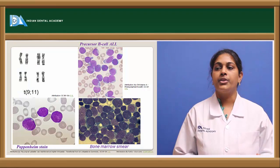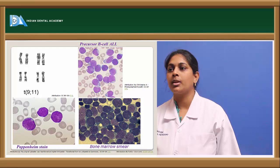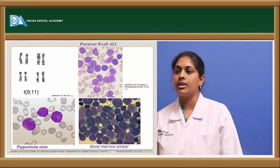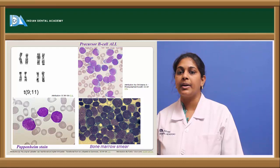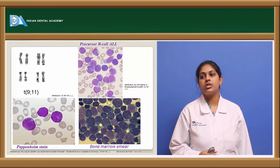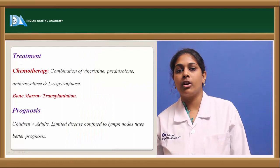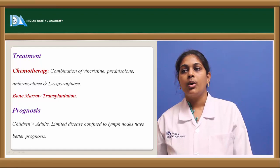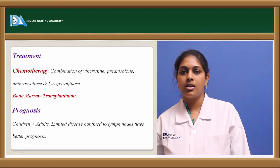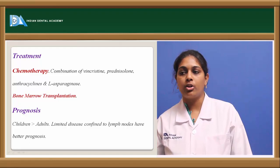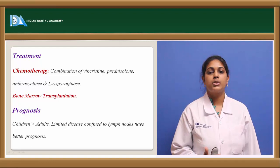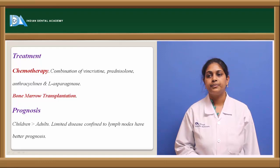Pictures show translocation of chromosome 9 to 11 forming the Philadelphia chromosome, precursor B cell ALL showing an adjacent extra rim of cytoplasm, and a papain stain of precursor B cells. The bone marrow smear shows hypercellularity. Treatment of ALL involves vincristine, prednisolone, and L-asparaginase. In cases of severe bone marrow involvement, bone marrow transplantation is suggested. Prognosis is better in children than adults, and limited disease confined to lymph nodes has better prognosis.